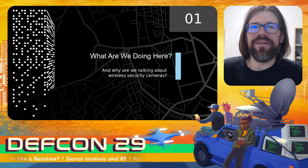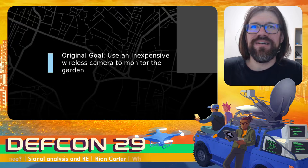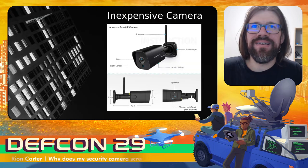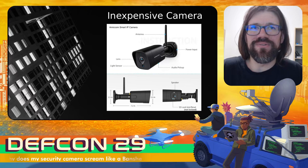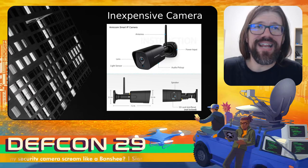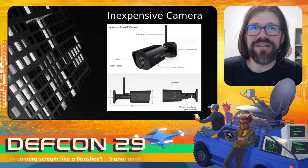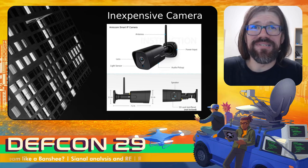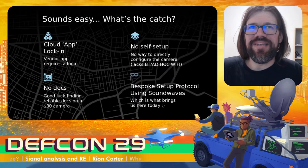So what are we doing here, and why are we talking about wireless security cameras? My original goal, before I even had the idea to submit a DEF CON talk, was to use an inexpensive wireless camera to monitor my garden. This is the inexpensive camera I selected — it's got an antenna suitable for outdoor use. It has a microphone and a speaker, so you could have two-way communication. And the nice thing is that it was cheap and seemed like it would do the job.